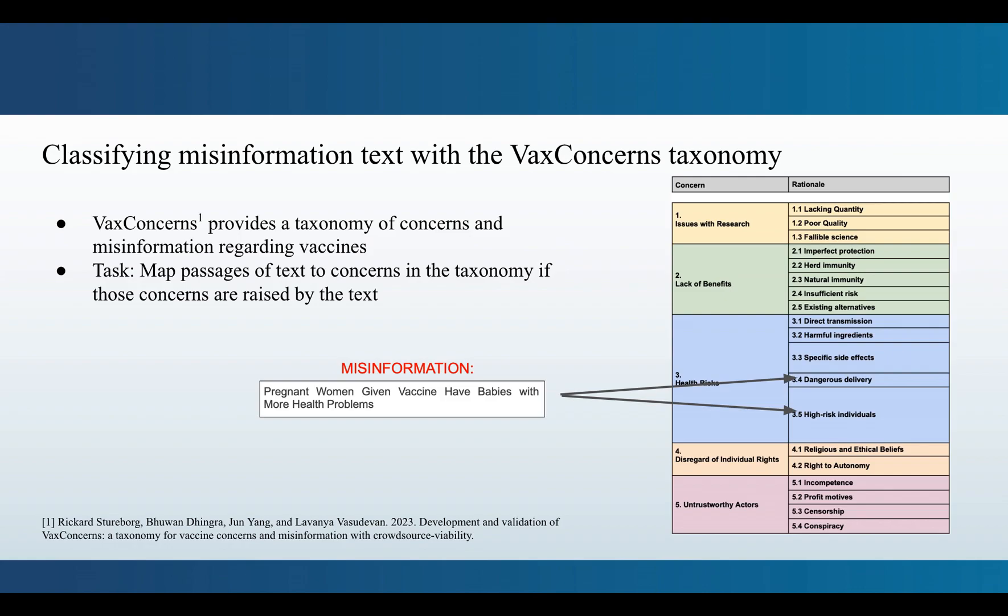One helpful thing to track to support this goal would be the types of concerns that people have. You can imagine this might be helpful if you, for example, wanted to track how concerns might evolve over time during a potential global health crisis. That would have been a really nice system to have had developed pre-COVID-19.